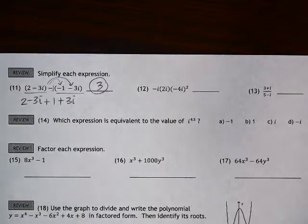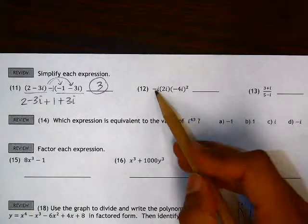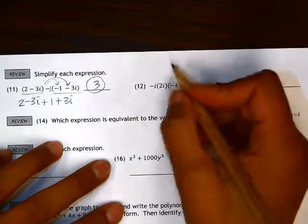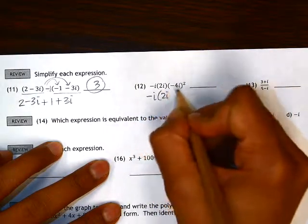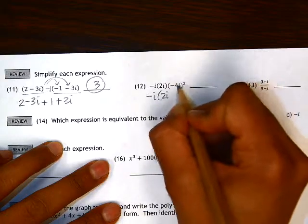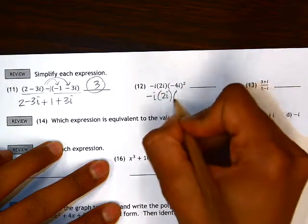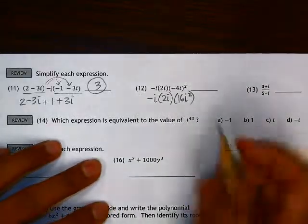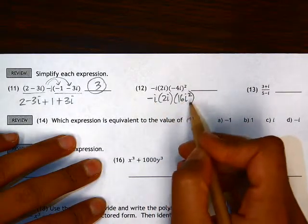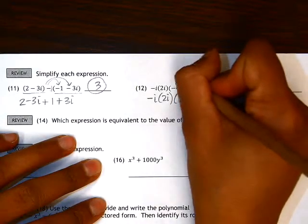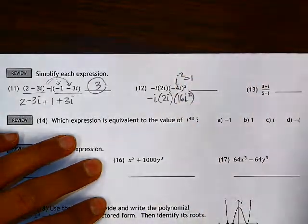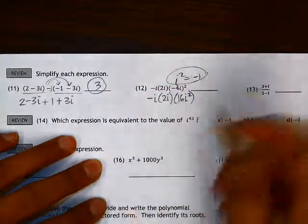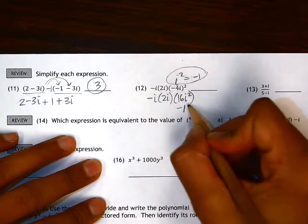On number 12, we have these expressions being multiplied together. So, let's first do the exponent here. If we square this entire quantity, we get 16i squared. And here, anytime you have an i squared, we can simplify that because we know i squared equals negative 1. So this becomes negative 16.